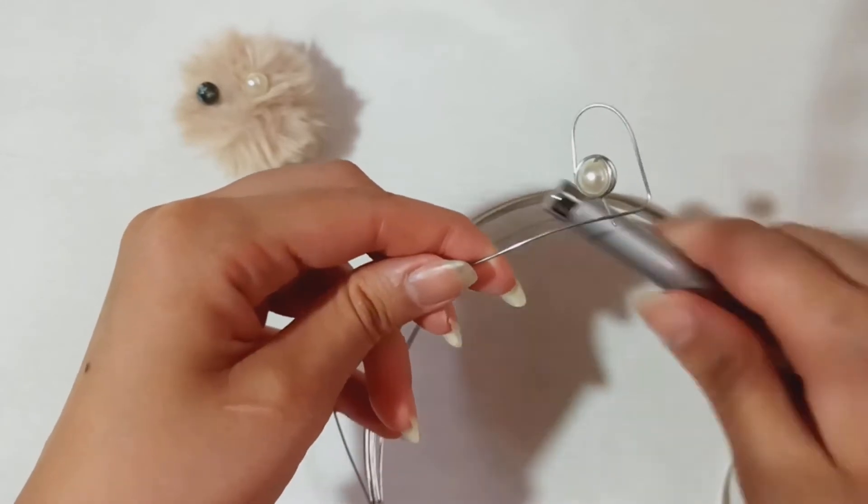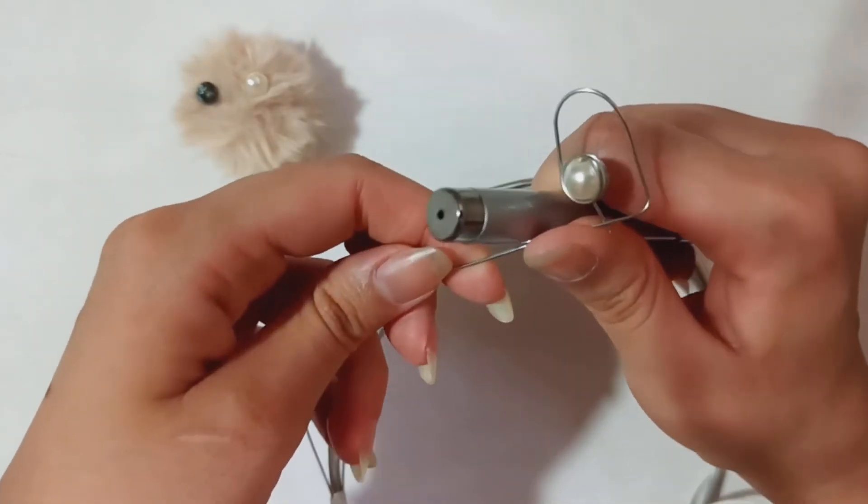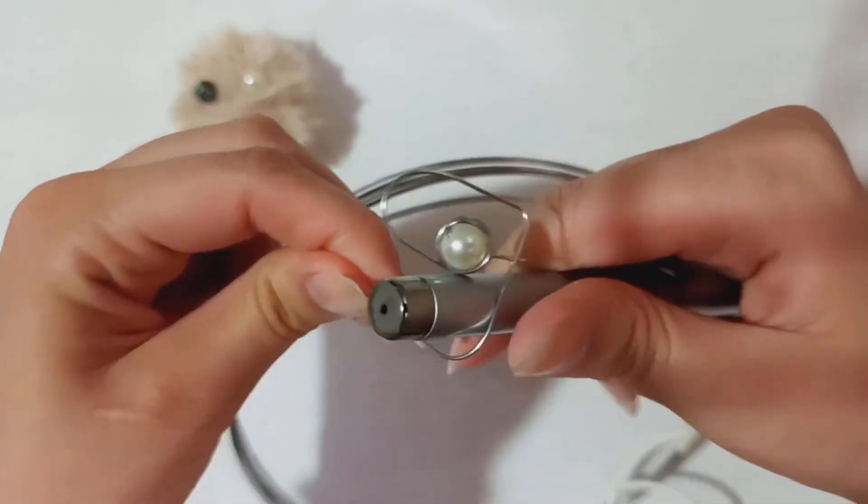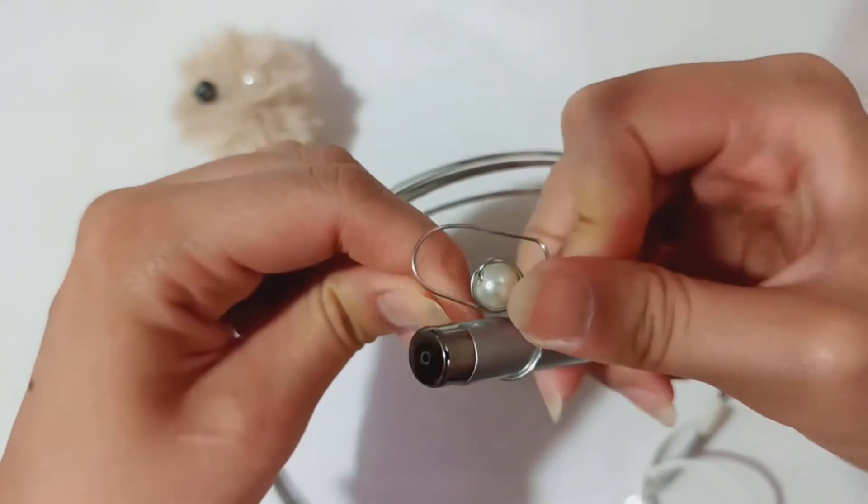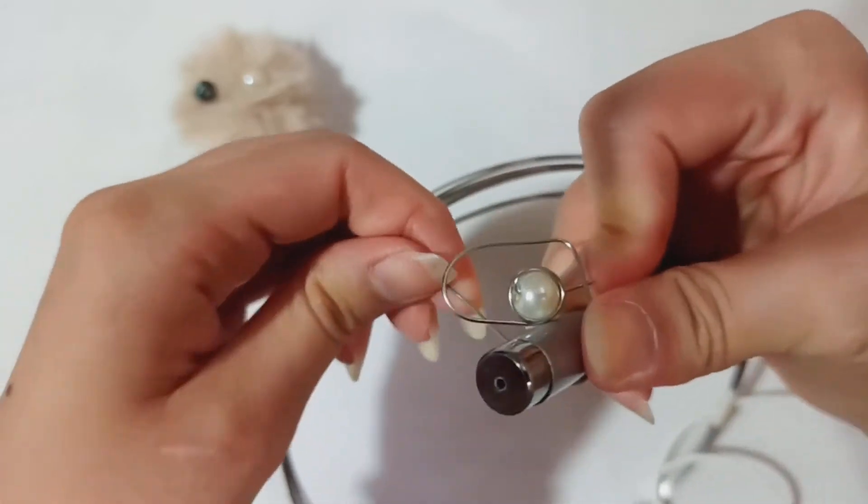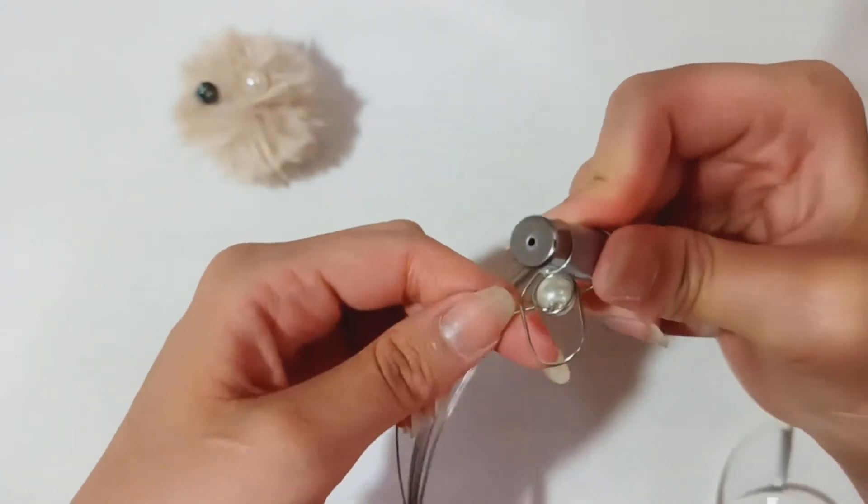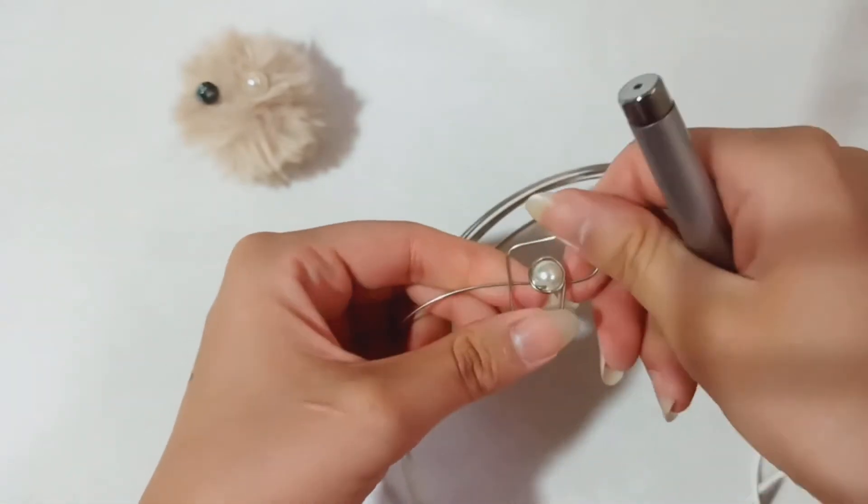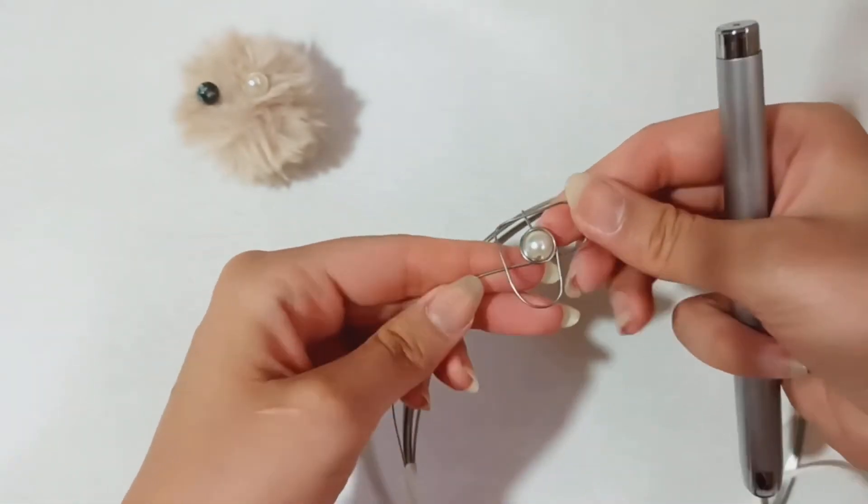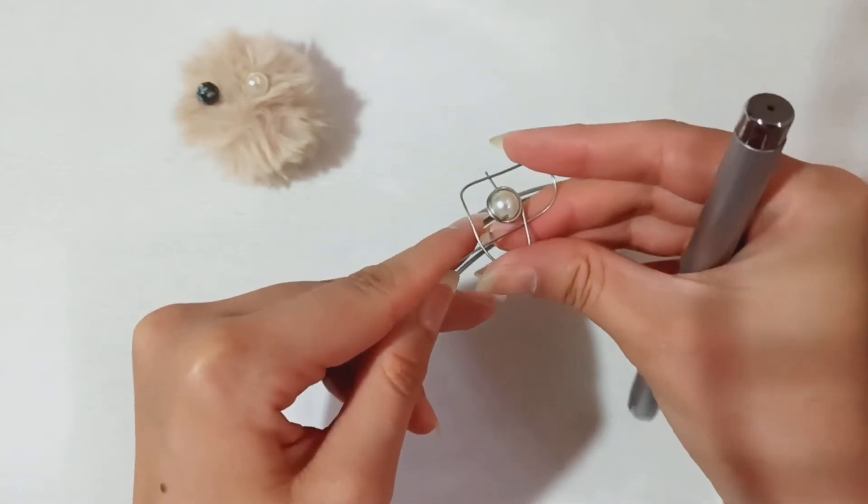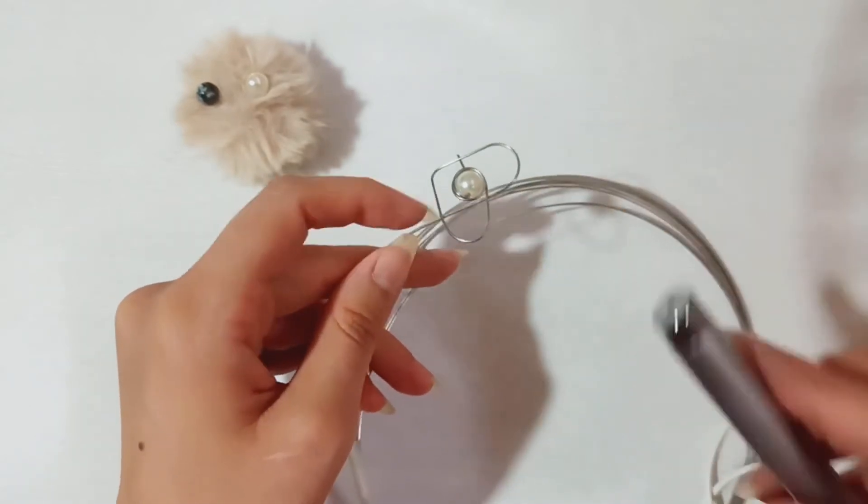Again with your pen or mandrel, make a U-shape. Pay attention that these two parts should be as symmetrical as possible.